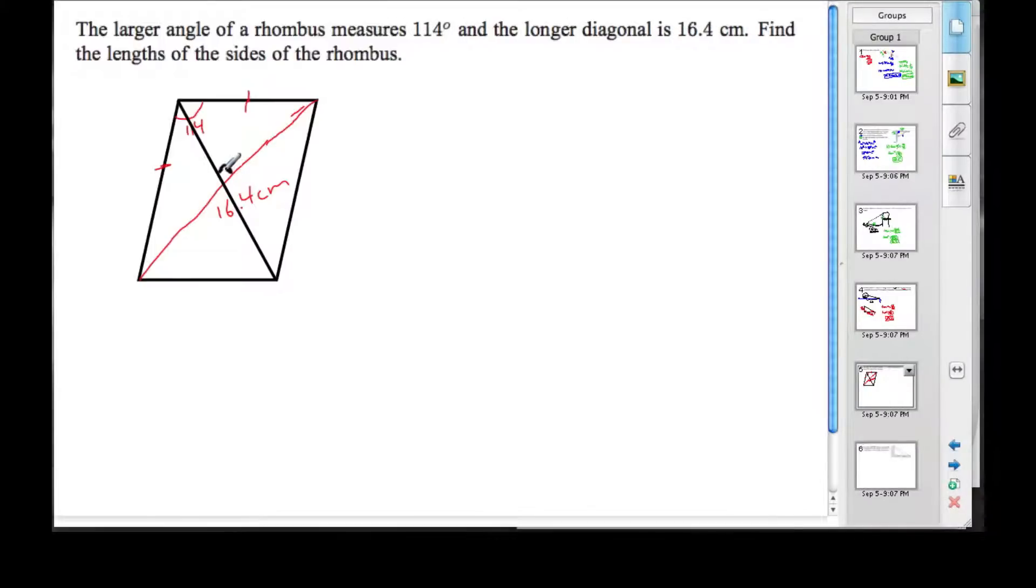These sides are all the same length, so therefore this angle here is going to be 114 divided by 2, so 57 degrees.